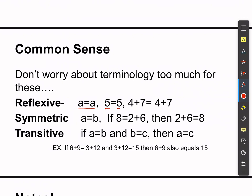The symmetric property — this is why I get these confused — says if I have one thing on one side of the equal sign and another thing on the other side, I can write those in either way. Notice: 8 equals 2 plus 6. Due to the symmetric property, I can write that 2 plus 6 equals 8 — I can just reverse it.